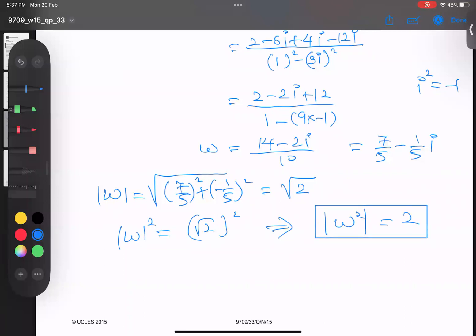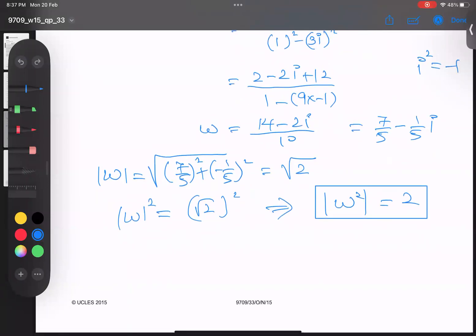Now he's asking for the argument. Looking at the Argand diagram, the real part is positive but the imaginary part is negative, so the answer is in the fourth quadrant. This angle θ: the real part is 7/5 and imaginary is 1/5. To find the angle, θ = tan⁻¹(opposite/adjacent).